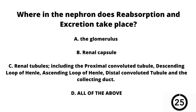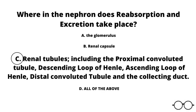Question number 17. Where in the nephron does reabsorption and excretion take place? A, the glomerulus. B, the renal capsule. C, the renal tubules, which include the proximal convoluted tubule, descending loop of Henle, ascending loop of Henle, distal convoluted tubule, and the collecting duct. Or D, all of the above. Our answer here is C — the renal tubules, which include the proximal convoluted tubule, the descending loop of Henle, ascending loop of Henle, distal convoluted tubule, and the collecting duct. This is all where reabsorption and secretion take place.